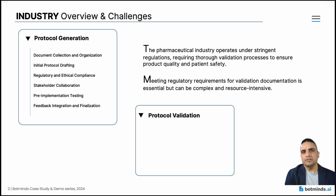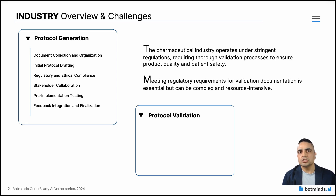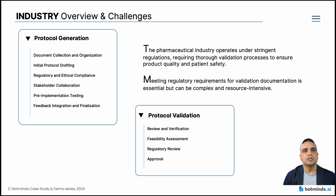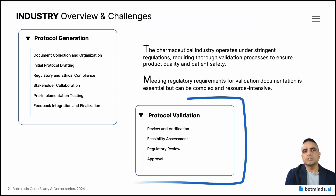Protocol validation, on the other hand, ensures that the protocol is accurate, feasible, and ready for implementation. This process checks that the protocol will achieve its intended objectives and comply with regulatory requirements. Key aspects include review and verification, feasibility assessment, regulatory review, and approval. With Botmines, we'll focus on the protocol validation process.